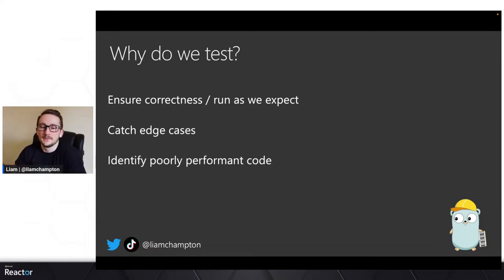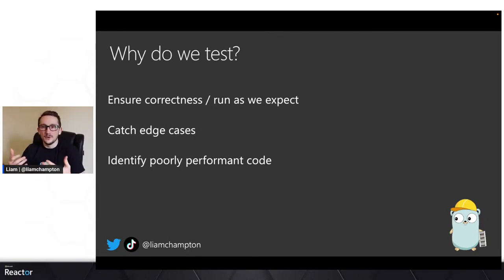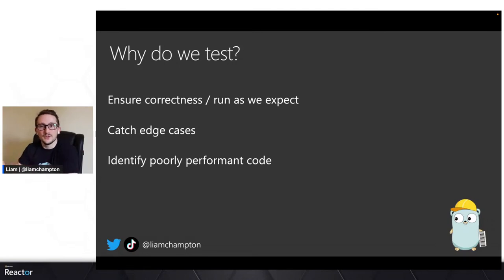The third point is to identify poorly performant code. Writing code is great, but writing good code is different, and performant code is another step forward. You always want to make sure your code is running as well as possible. We're in a cloud-native world now where we are trying to create the best — and cheapest — code possible, so we're not always taking up so much CPU and memory in your cloud-hosted machines. That's where unit testing and benchmark testing come in. Benchmark testing is another built-in part of the Go tool chain which helps you identify and benchmark your code.